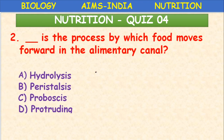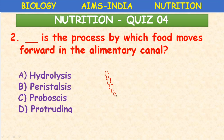The process by which food moves forward in the alimentary canal is the wave-like motion of the oesophagus, called peristalsis — option B is correct.